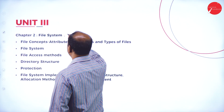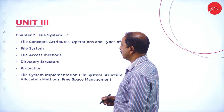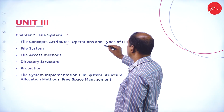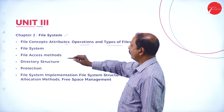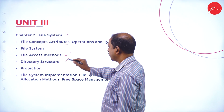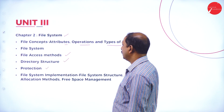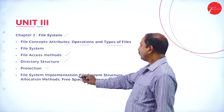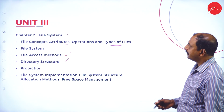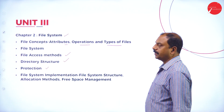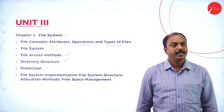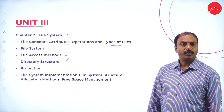Chapter 2 of Unit 3 covers the file system. Topics include file attributes, file operations, types of files, file access methods, directory structure, file protection, and implementation of the file system structure. This completes the entire syllabus, which is divided into three units.